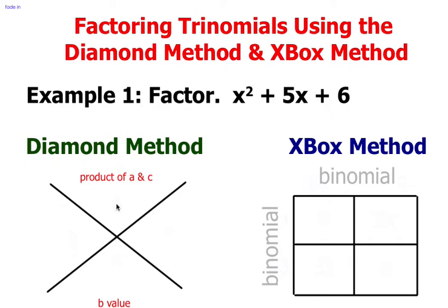Try to think of what the a value times the c value is equal to. I hope you're thinking of 6. Your b value is 5. Now try to think of two factors that multiply to 6 but also have a sum of 5.